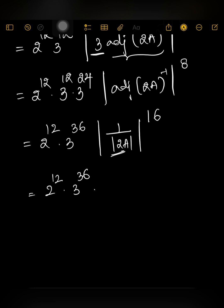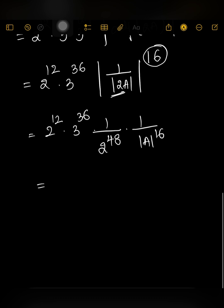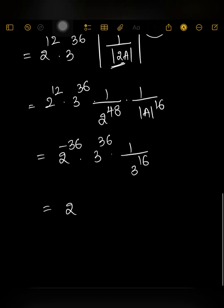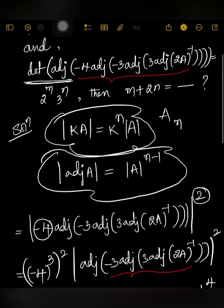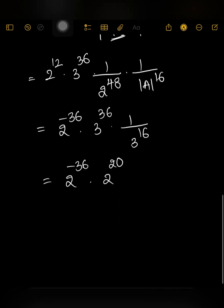Now det(2A) whole power 16 gives 2^3 whole power 16 = 2^48, but since it is det(adj(2A)^(-1)) = 1/det(2A), we get 2^(-48). Combining all powers of 2: 2^12 · 2^12 · 2^(-48) = 2^(-24). And the 3^36 becomes 3^36 · (1/det A)^16 = 3^36 · 3^(-16) = 3^20. So we get 2^(-36) · 3^20, comparing with 2^m · 3^n.